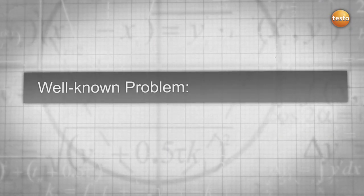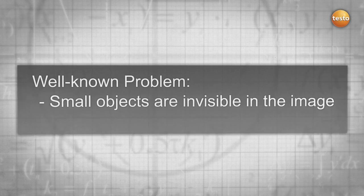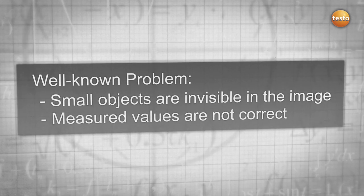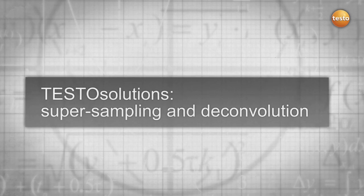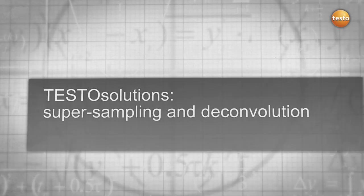The problem is well known. Small objects are invisible in the image, and even if visible, the measured values are not correct. The Testo solution: supersampling and deconvolution.